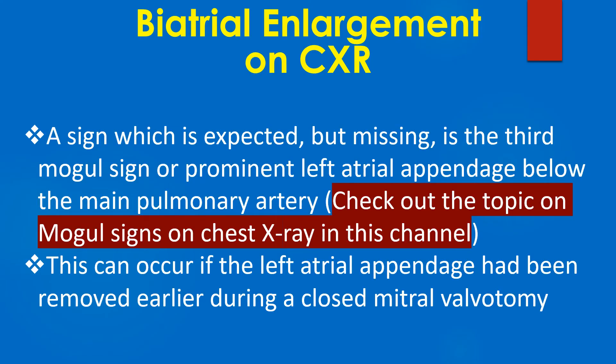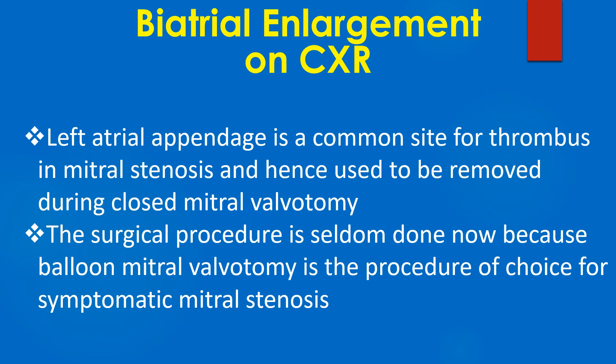A sign which is expected but missing is the third mogul sign, or prominent left atrial appendage below the main pulmonary artery. This can occur if the left atrial appendage had been removed earlier during a closed mitral valvotomy. The left atrial appendage is a common site for thrombus in mitral stenosis and hence used to be removed during closed mitral valvotomy.